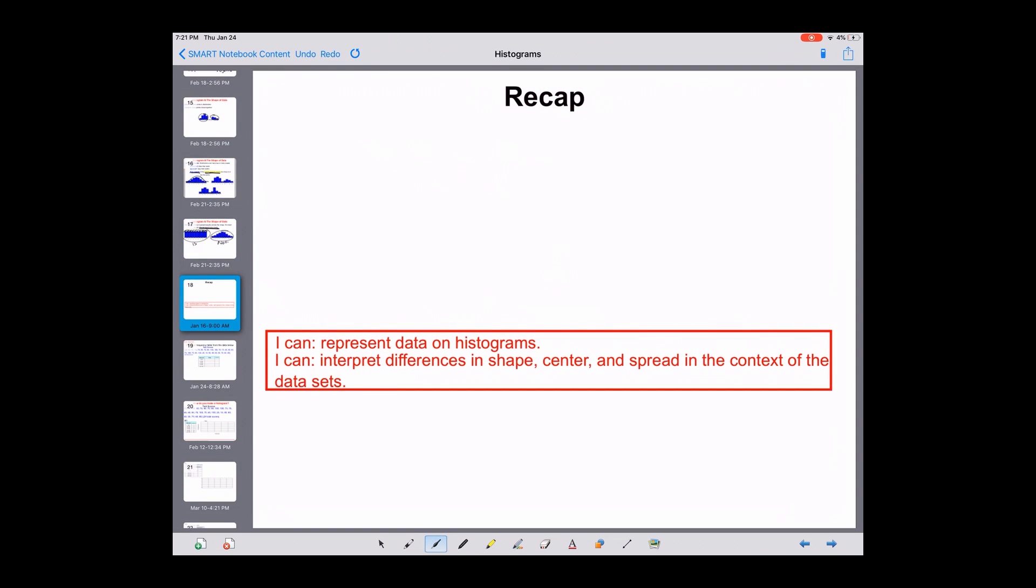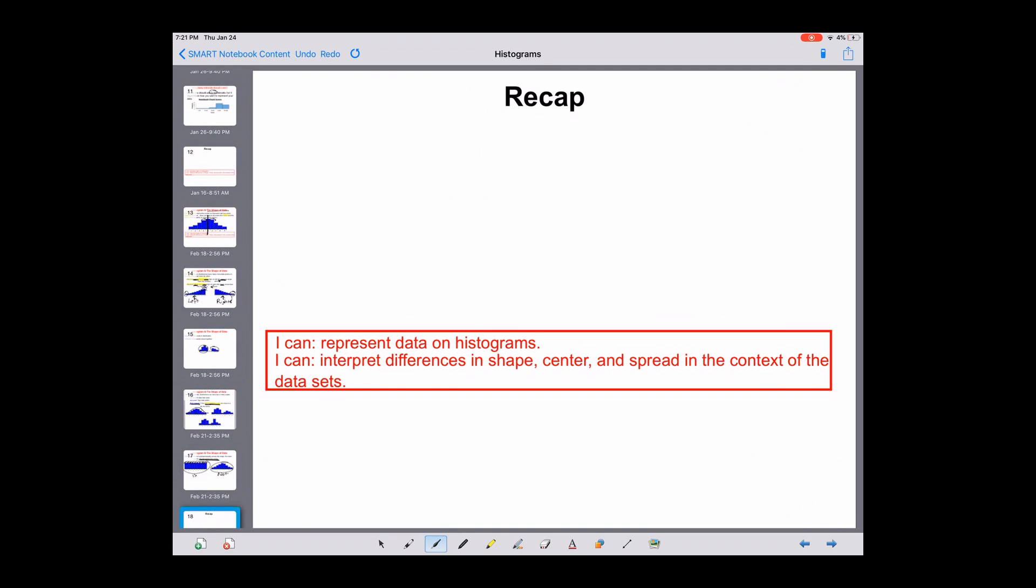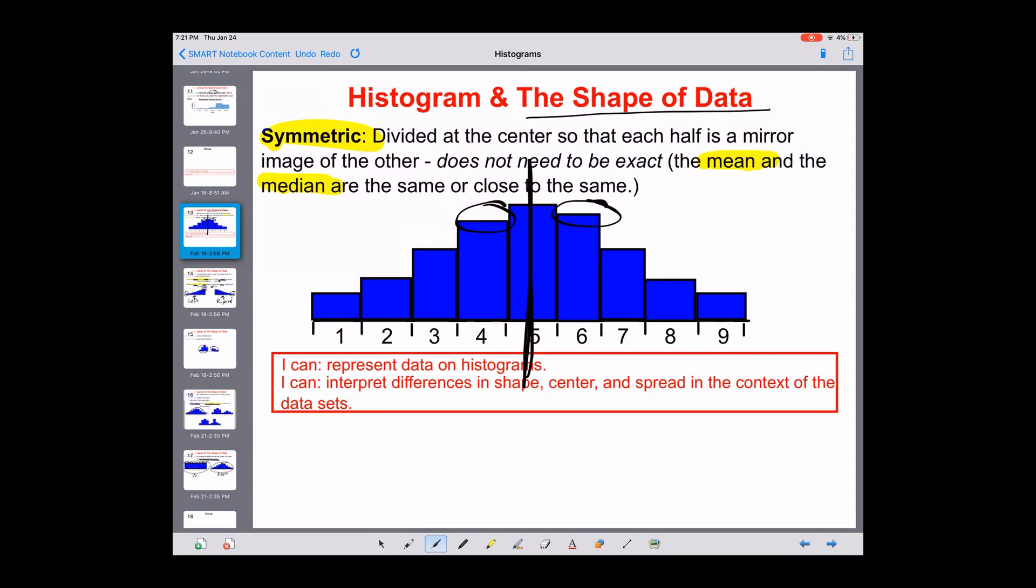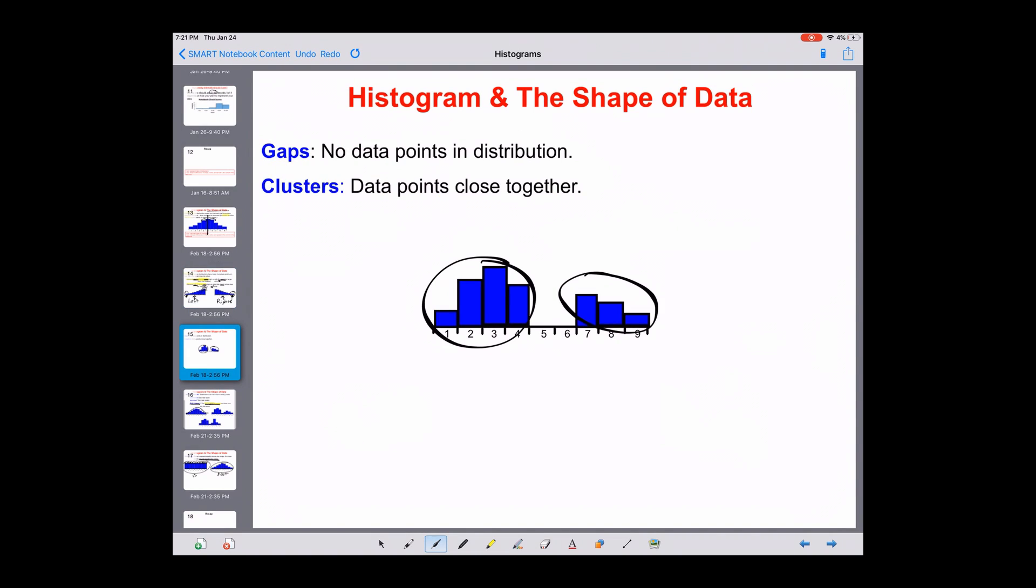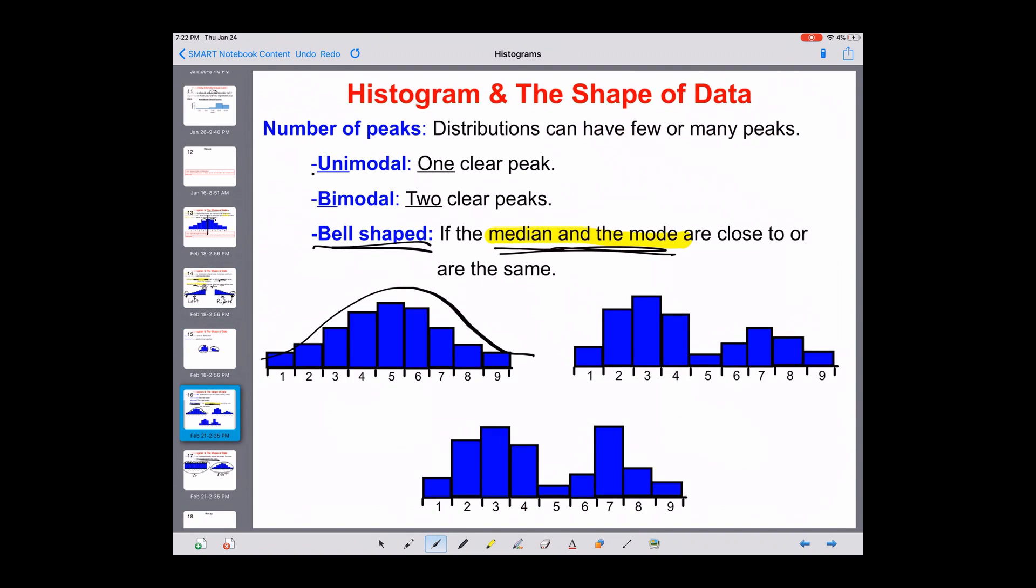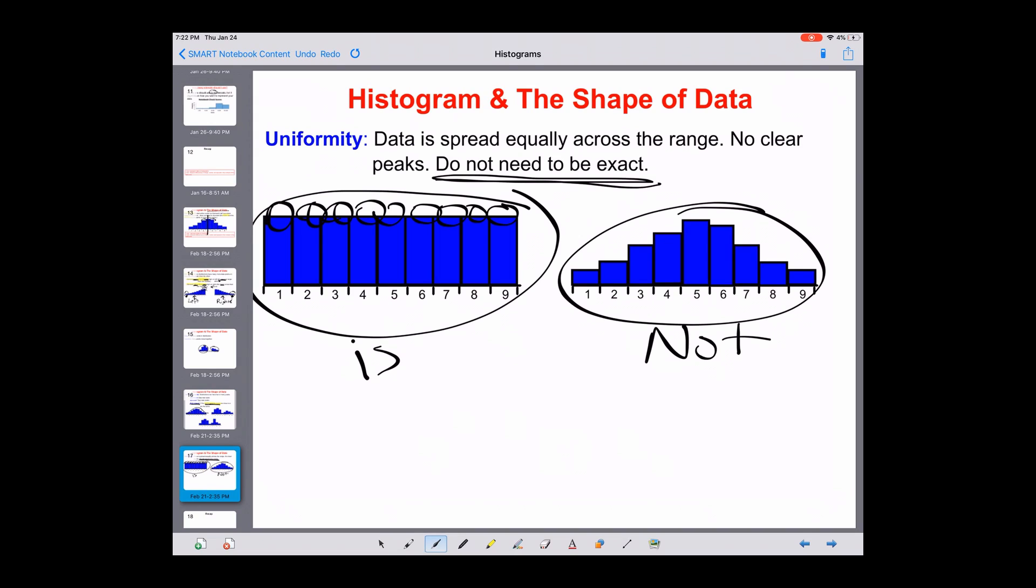So recap—there's a bunch of terms that we covered, right? I'm just going to quickly go through those one more time. We had symmetric, we had skewness, which is skewed to the left if it's low on the left, skewed to the right if it's low on the right. We had gaps and clusters, we had number of peaks—unimodal, bimodal, and bell shaped, which is also unimodal. And then we had uniformity, which is basically just the same across the top.